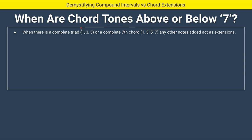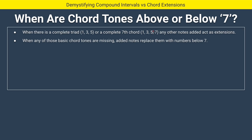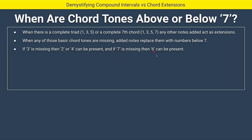Here are those rules: when there is a complete triad — one, three, five — or a complete seventh chord — one, three, five, seven — any other notes added act as extensions. The other notes we're talking about are two, four, and six. If you add a two, four, or six to a structure that already has one, three, five, and seven, that's when you call it nine, eleven, or thirteen respectively.